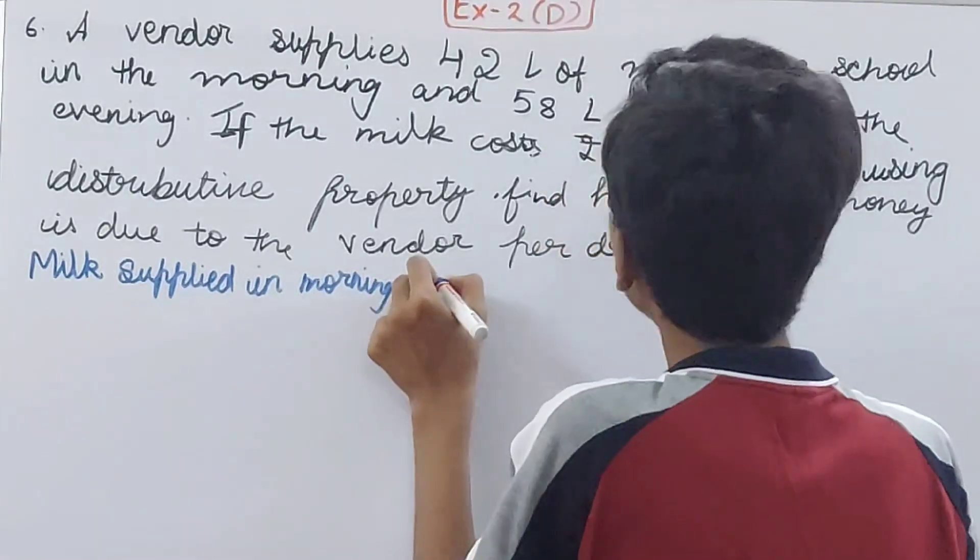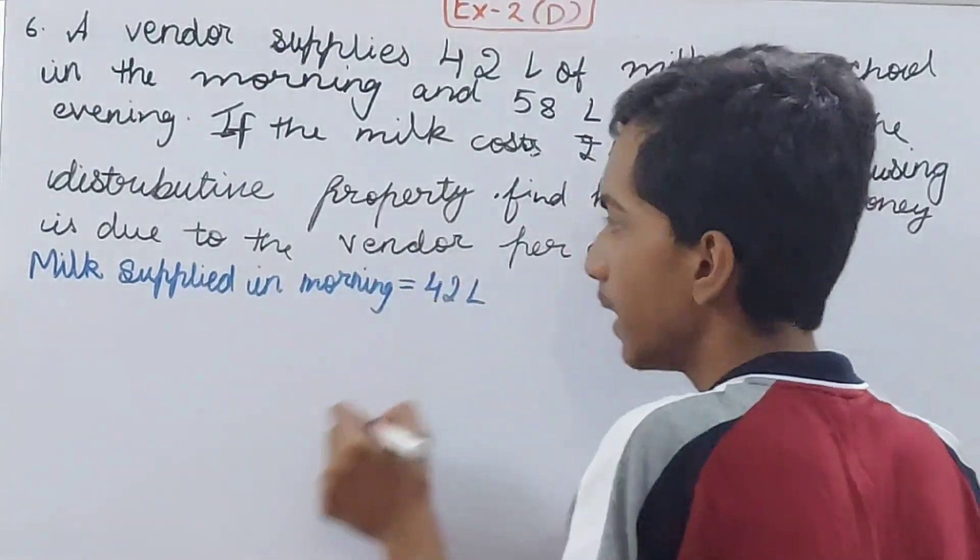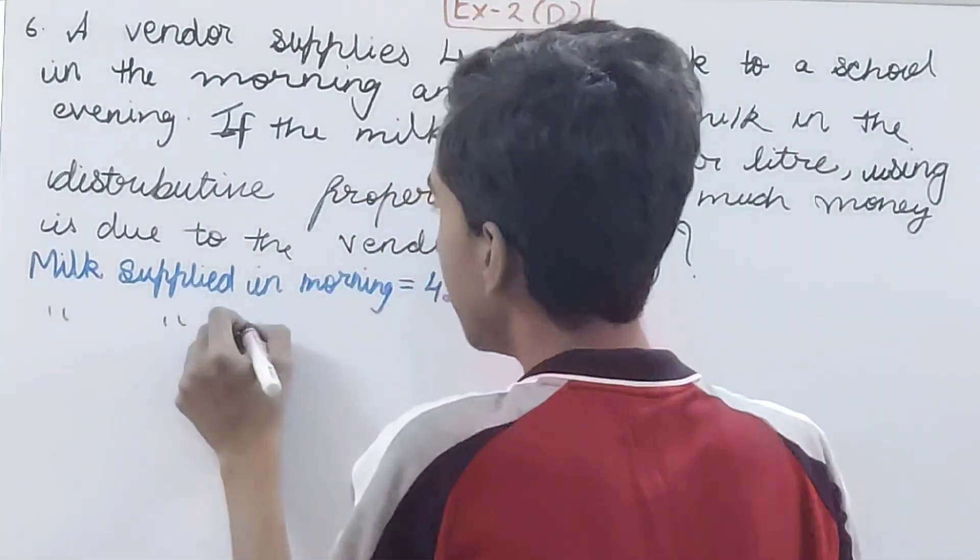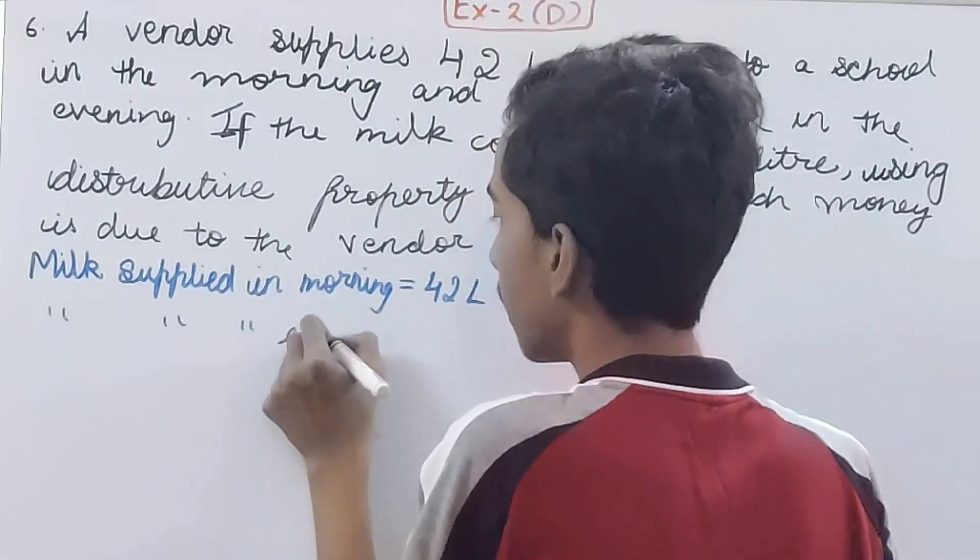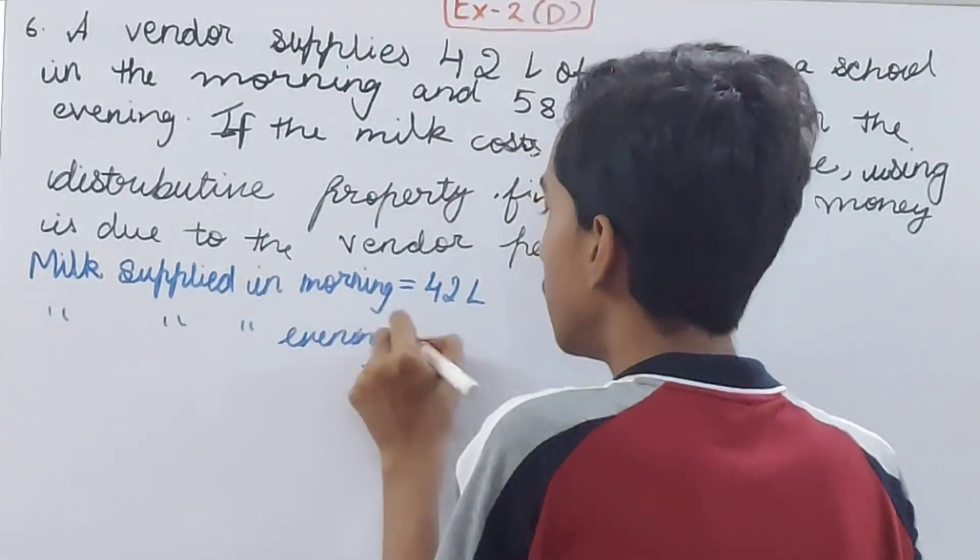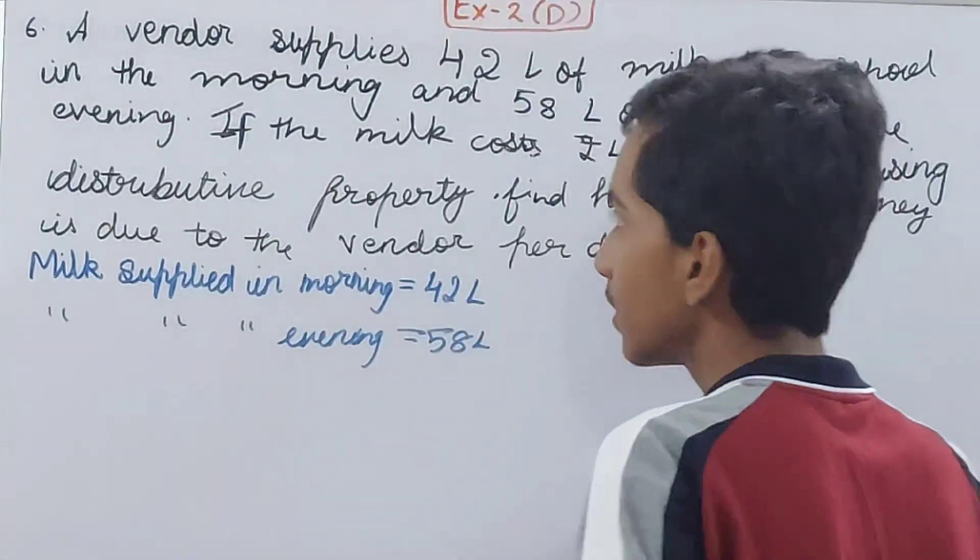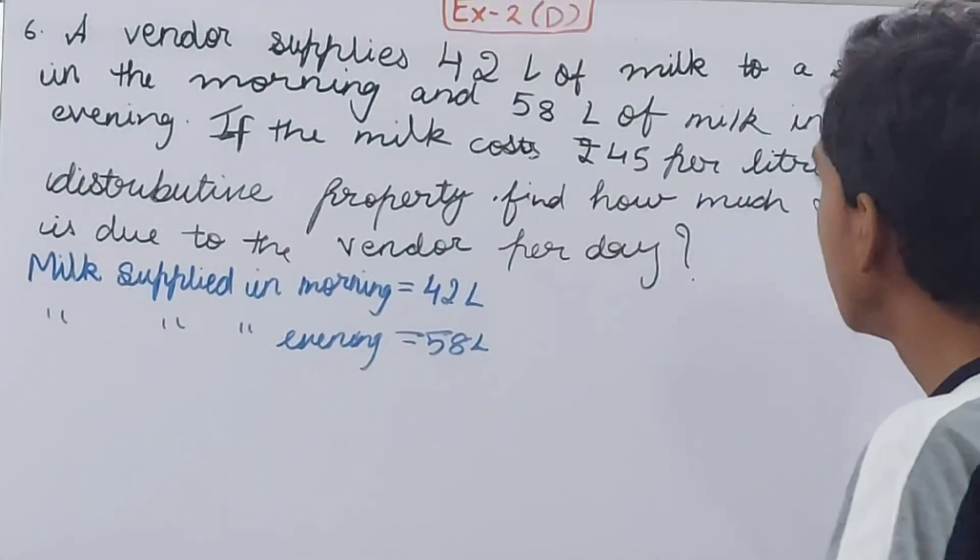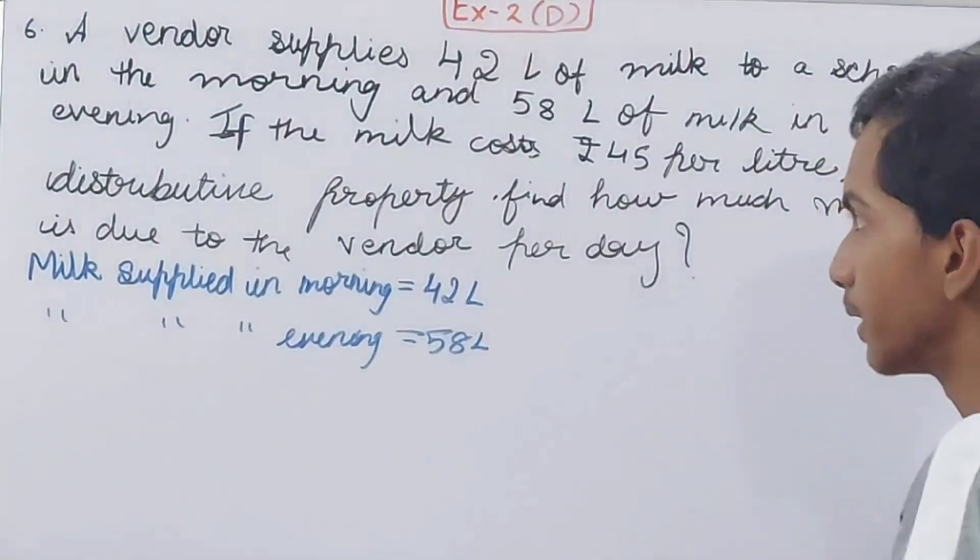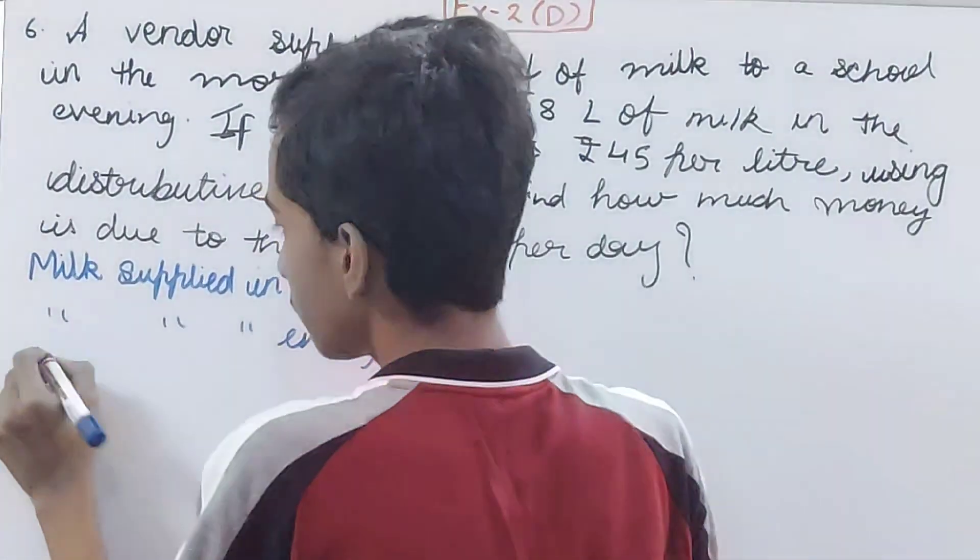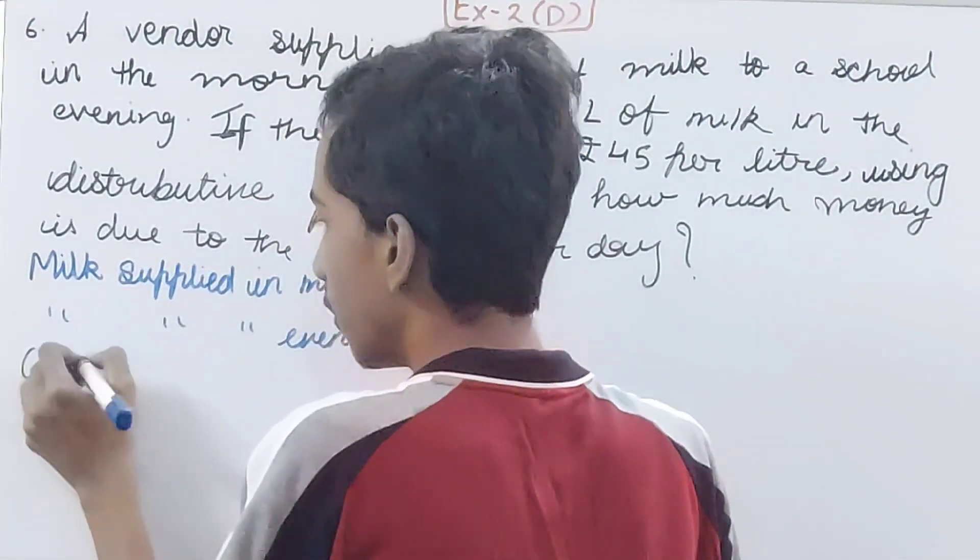This will be 42 liters. Then milk supplied in evening, this will be 58 liters. And what does it say here? The milk costs rupees 45 per liter, so I'll write here: cost of the milk...